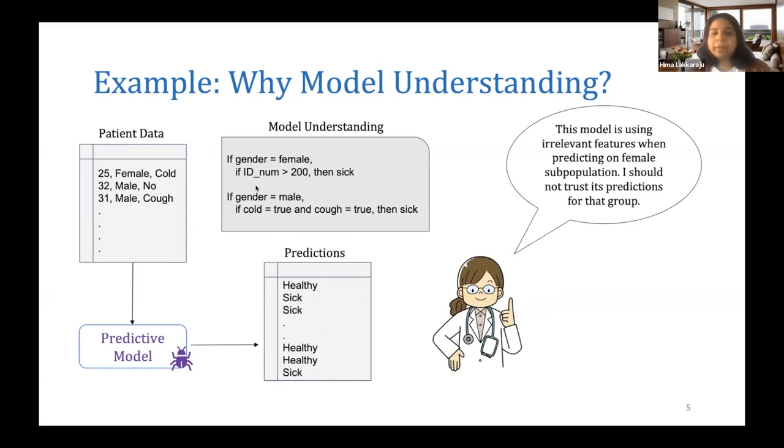For example, in this case, if the gender is female, the model is relying on ID numbers to determine who is sick, and if the gender is male, the model is relying on symptoms such as cold and cough. Looking at such an understanding will tell the doctor that while the model seems to be looking at the right kinds of features in the case of male patients, the same is not true for female patients.